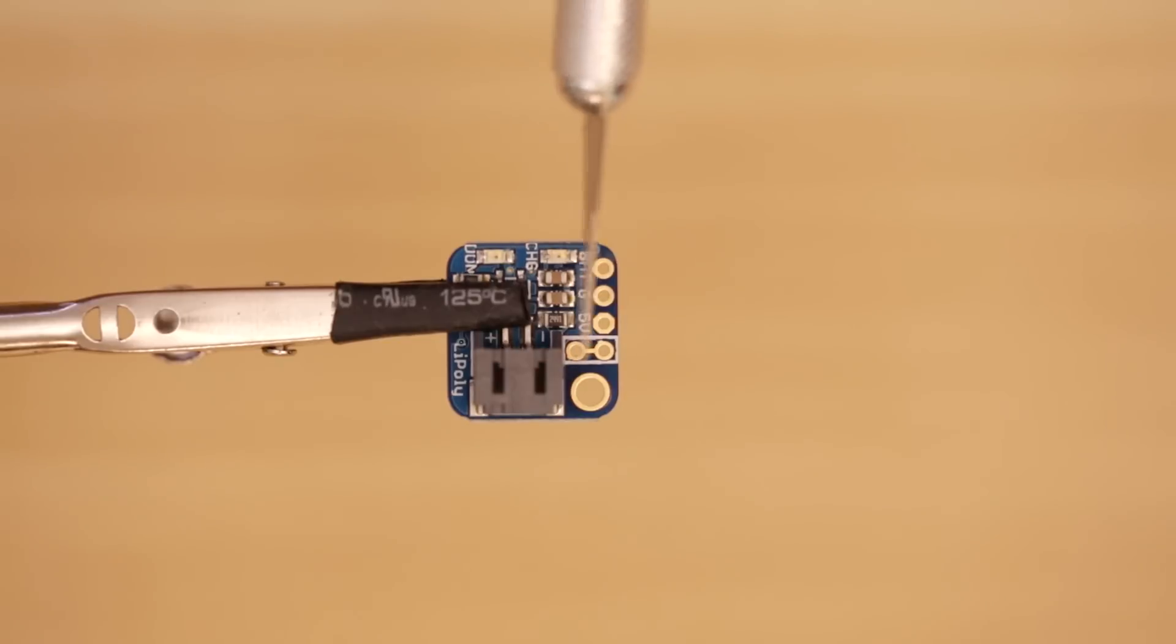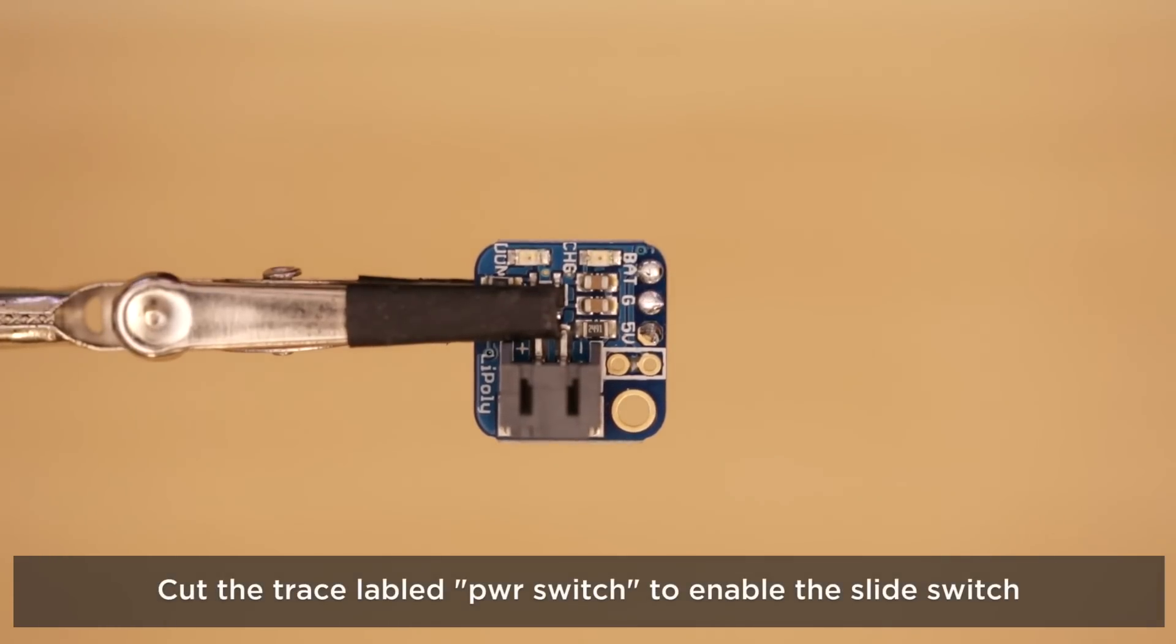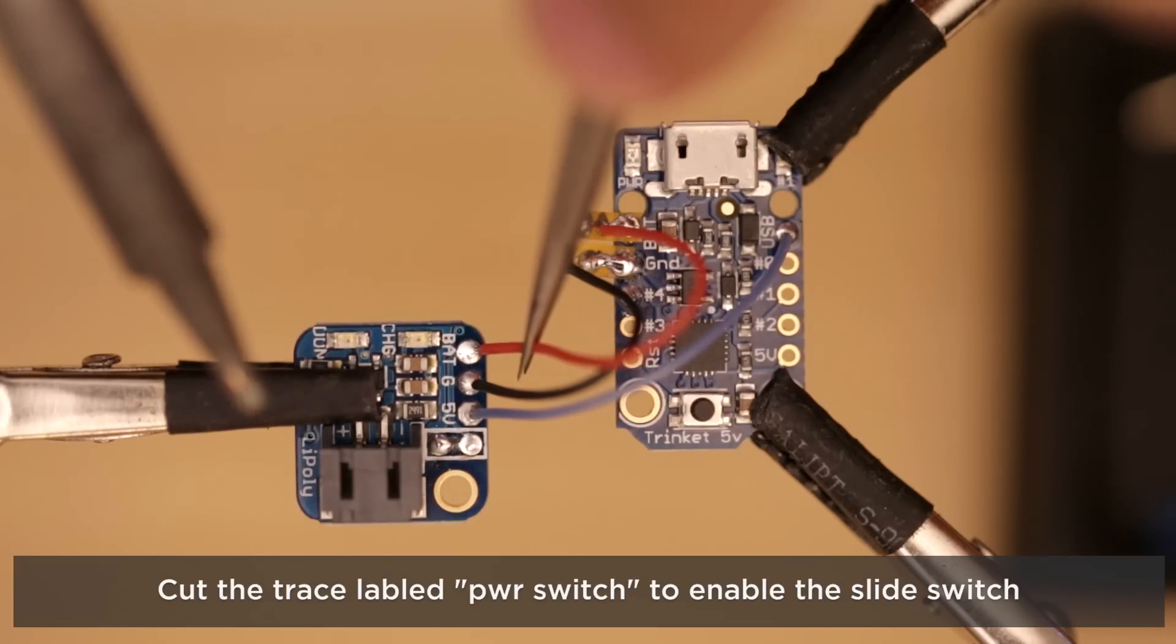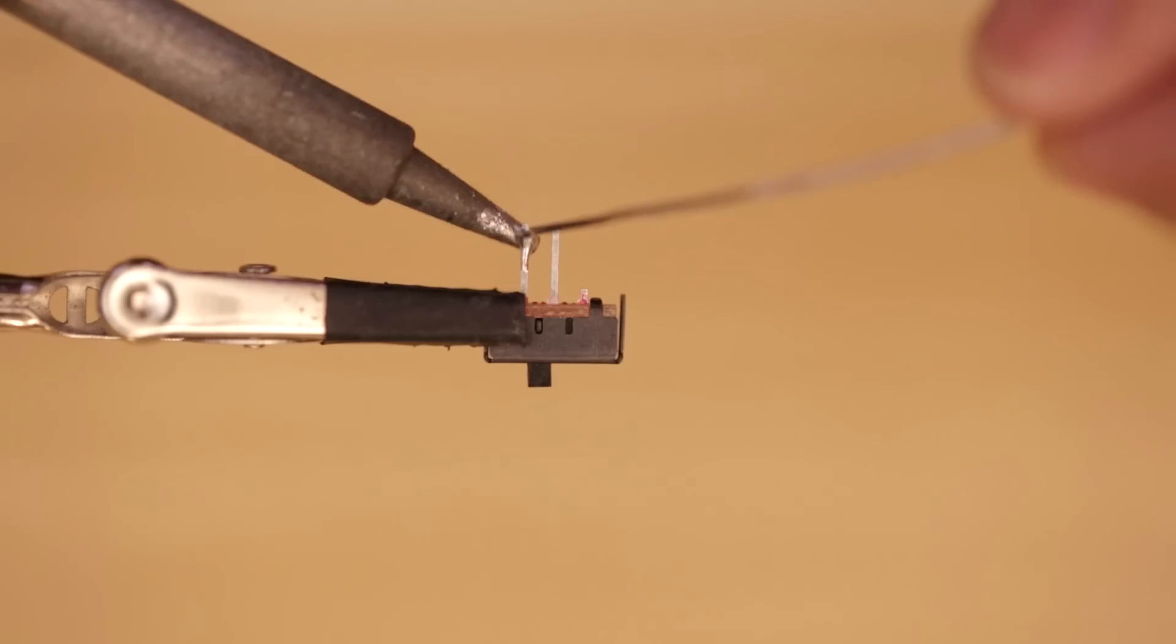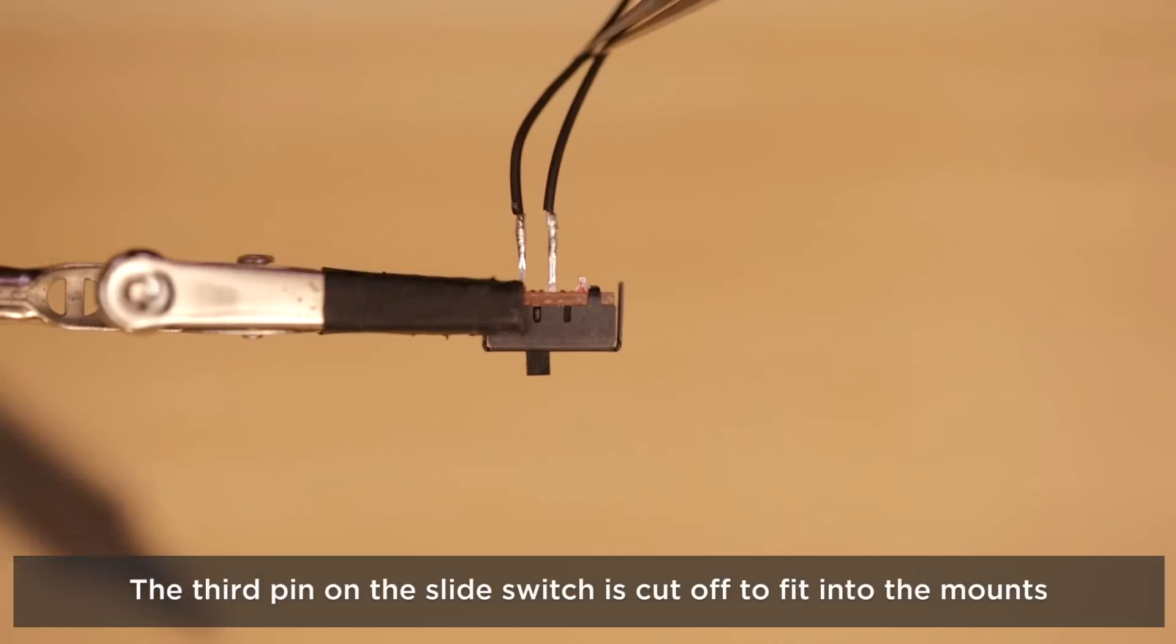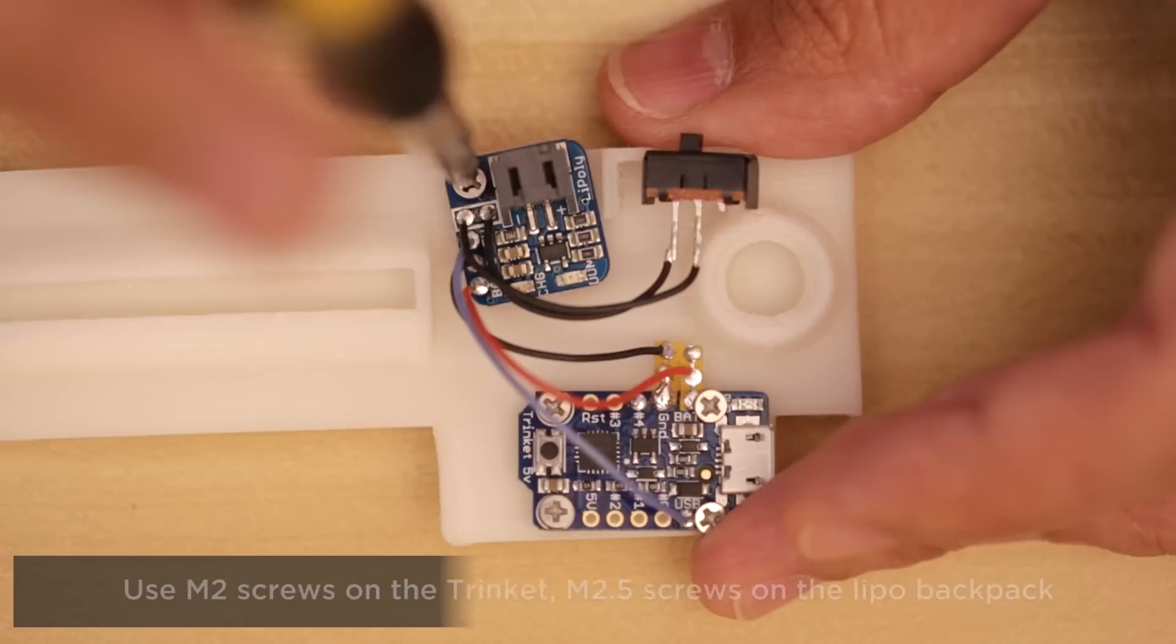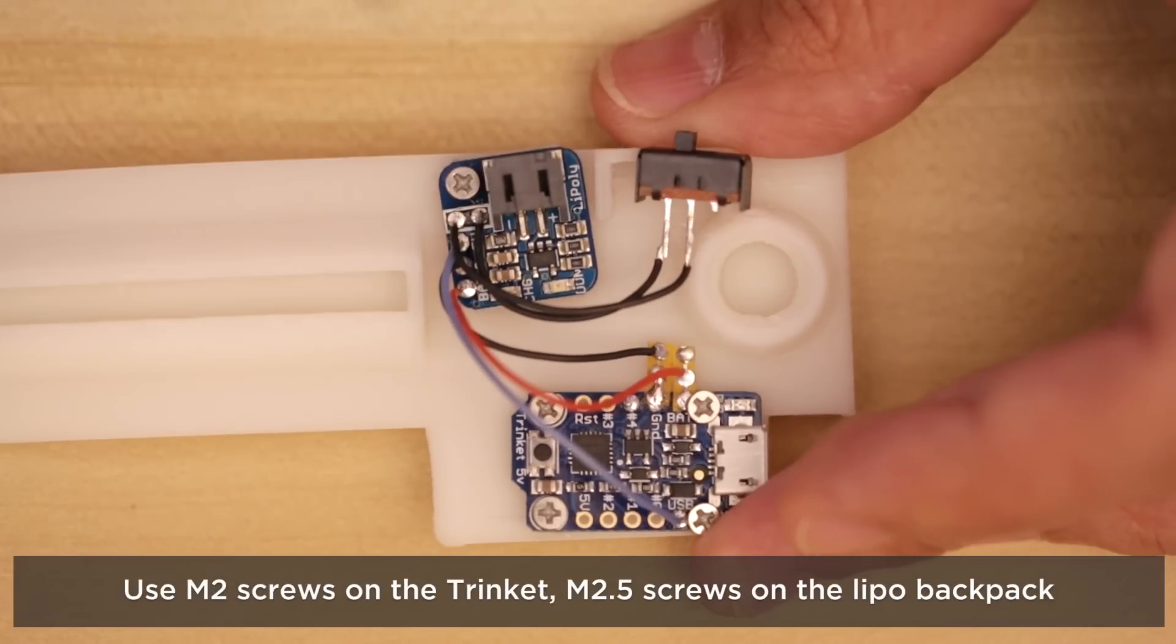We'll need to cut this trace on the LiPo backpack to enable the on and off switch. Then tin all of the pins and connect the wires from the trinket to the LiPo backpack. Now we can wire up the slide switch and connect it to the LiPo backpack.